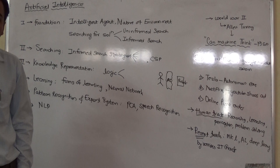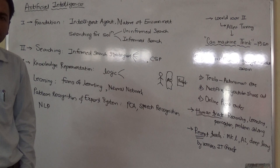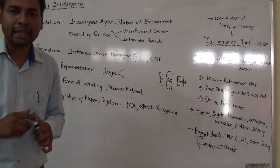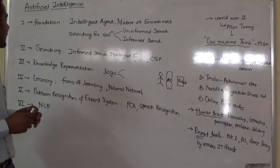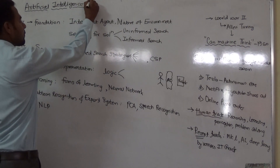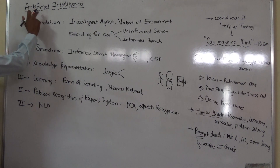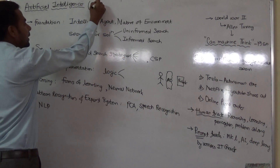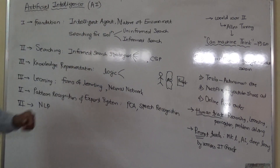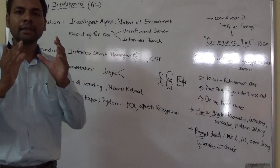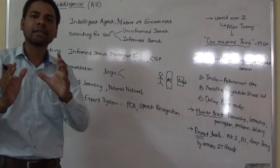We are going to cover various applications and a little historical background of AI. Artificial intelligence is a very popular word nowadays. In this word we can find two words: artificial and intelligence. In short it is also called as AI. What exactly is artificial intelligence?